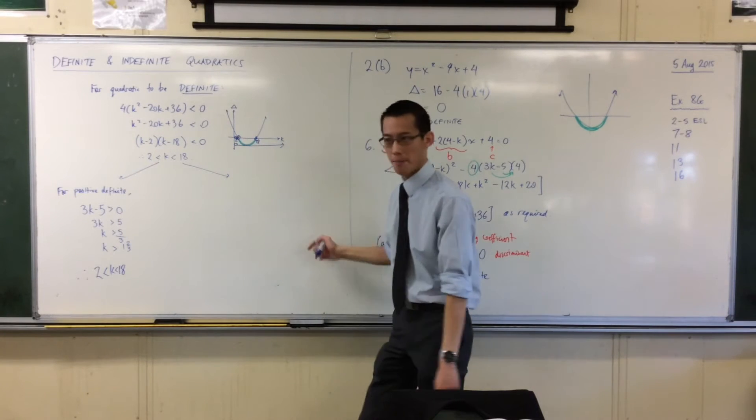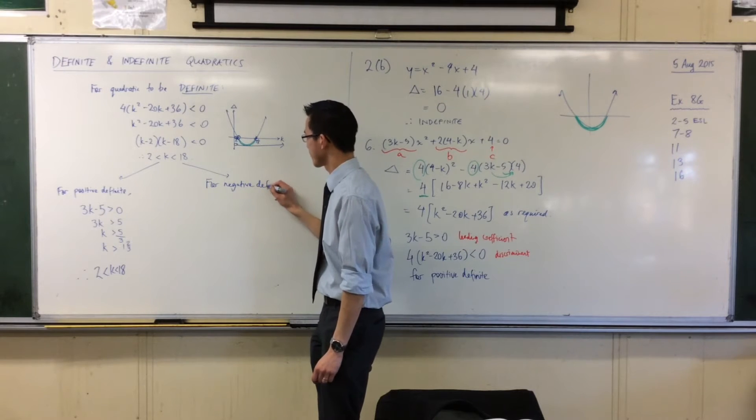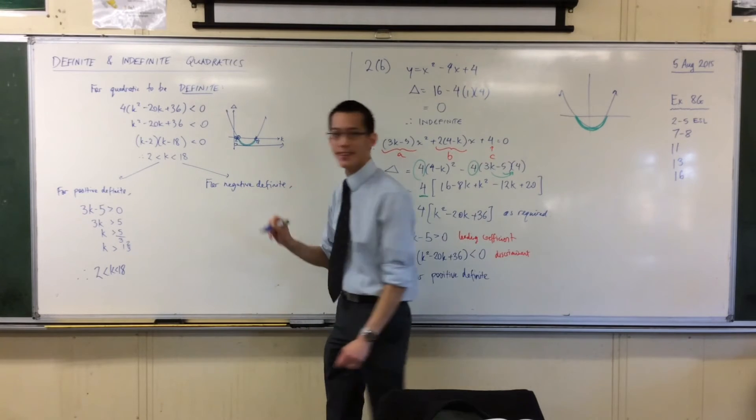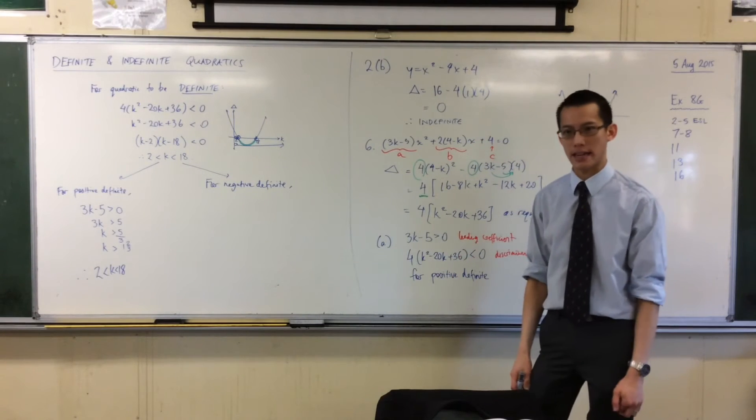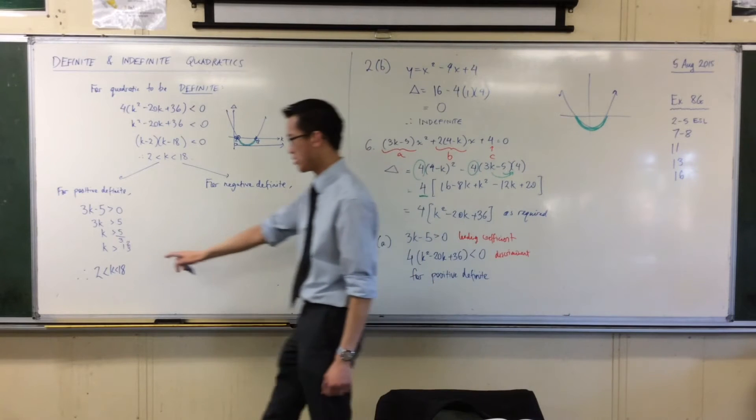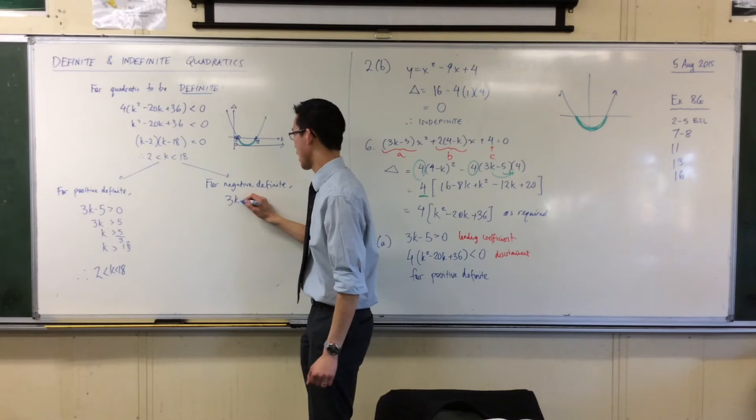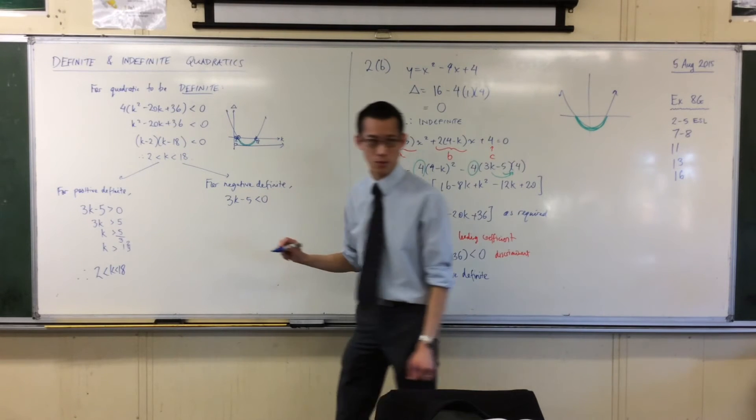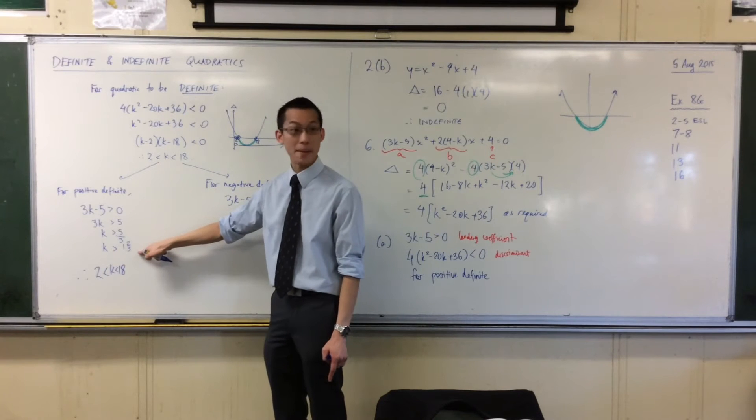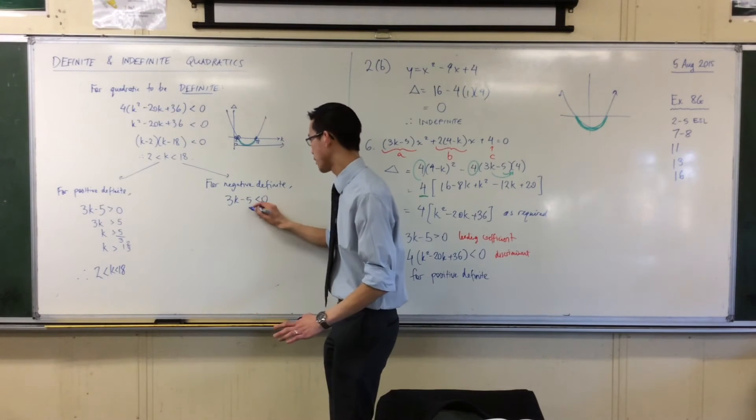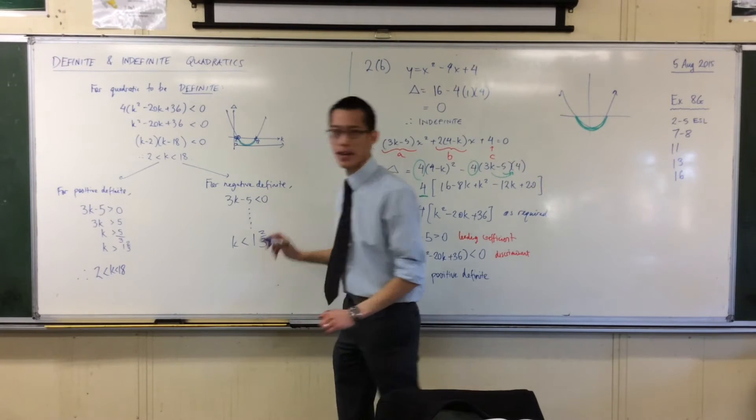So now I want to move into part B, which is for negative definite. Because we already did the legwork to work out what happens for a positive, I've already worked out what happens for k negative. It's just the opposite of this. Do you see that? I mean, I could reverse this if you like. 3k minus 5 is less than 0. But you can see, I'm going to go through exactly the same steps here to simplify out, make k the subject. The only difference is that the inequality is facing the other direction.